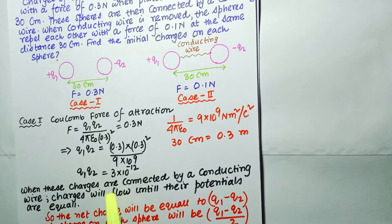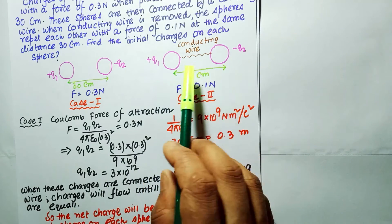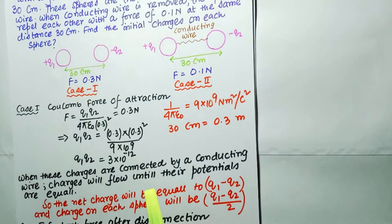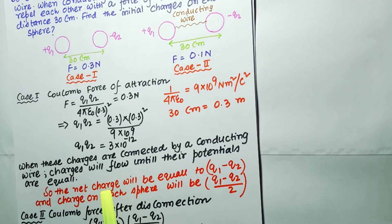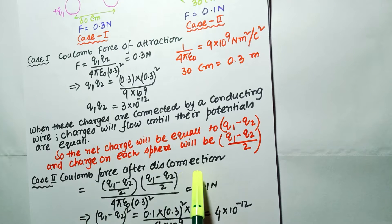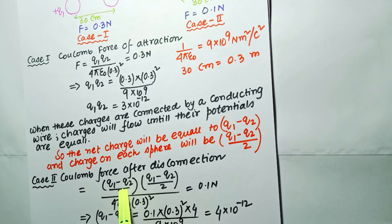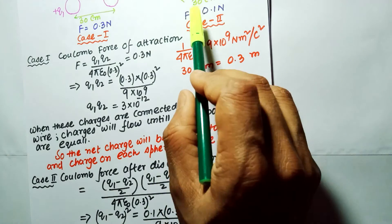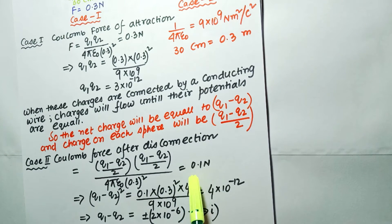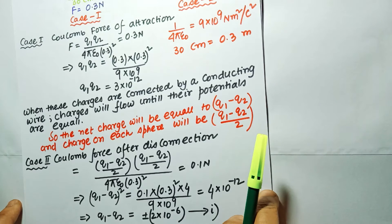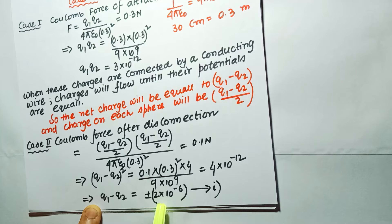When these charges are connected by a conducting wire, charges will flow until their potentials are equal. The net charge will be q1 minus q2, and the charge on each sphere will be (q1 − q2)/2. For Case 2, the Coulomb force after disconnection is: F = [(q1−q2)/2]² / (4πε₀·r²) = 0.1 Newton, with r = 30 cm. So (q1 − q2)² = 4×10⁻¹², giving q1 − q2 = ±2×10⁻⁶.